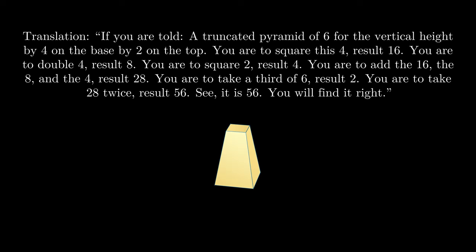One of the problems from the Rhind papyrus that serves as the topic of this video is translated as follows: If you are told a truncated pyramid of 6 for the vertical height, by 4 on the base, by 2 on the top.